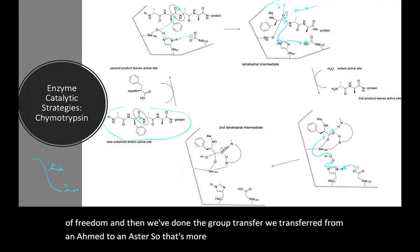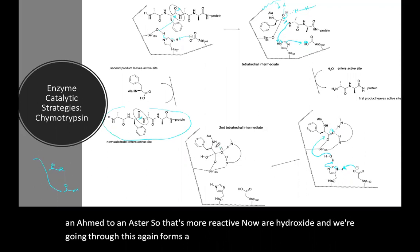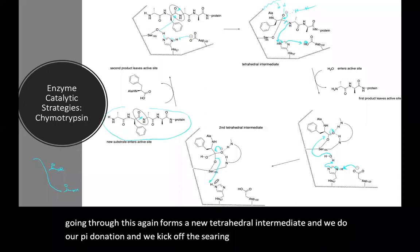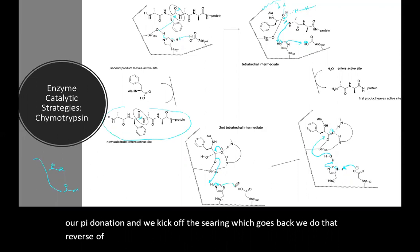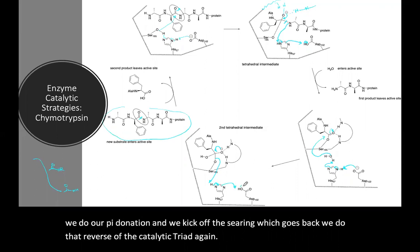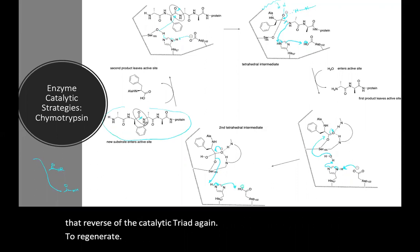Now our hydroxide and we're going through this again forms a new tetrahedral intermediate and we do our pi donation and we kick off the serine which goes back and we do that reverse of the catalytic triad again to regenerate the starting protonation state of the active site. So we've regenerated our catalyst.